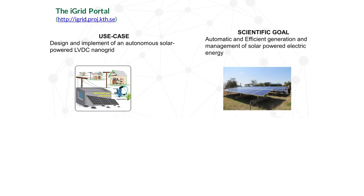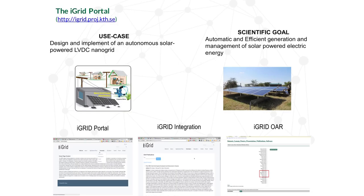iGrid is a project aiming at creating smart power grids in Tanzania. They used our portal framework to build a library of papers actually stored on the open access repository as a back end — users see only the portal, not the repository. They also plan to include applications to run analysis on that data.